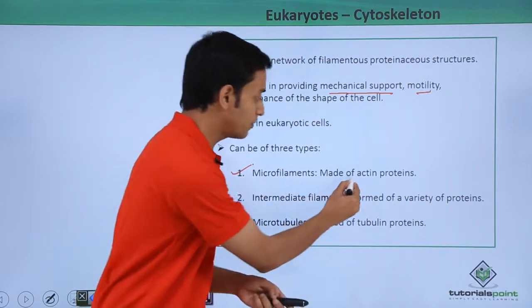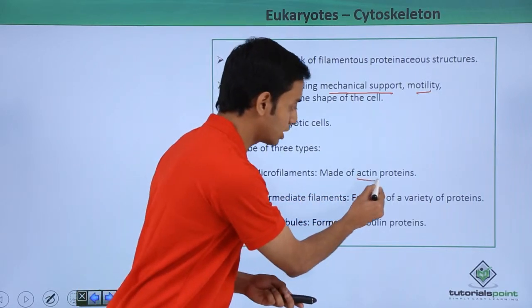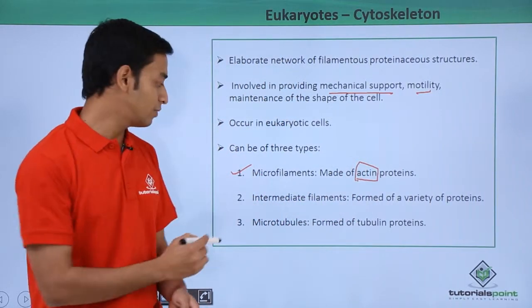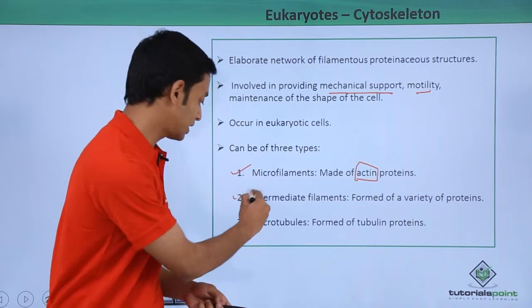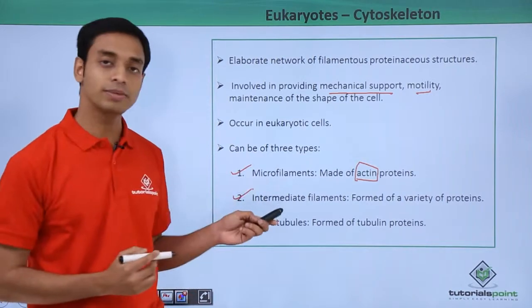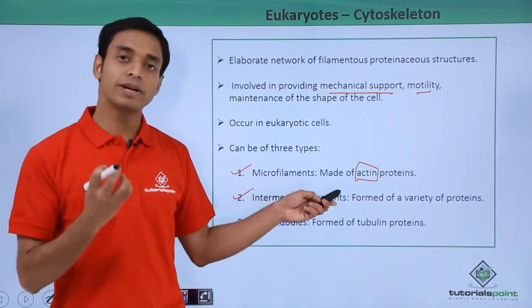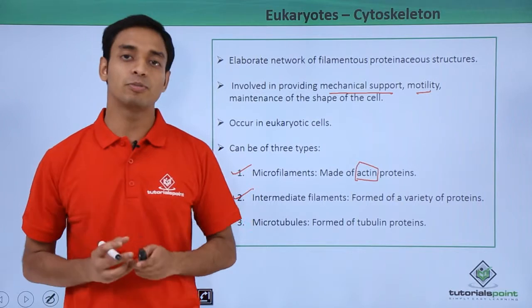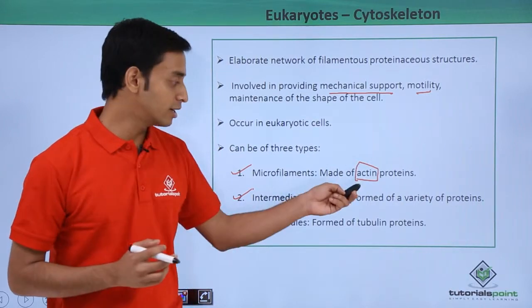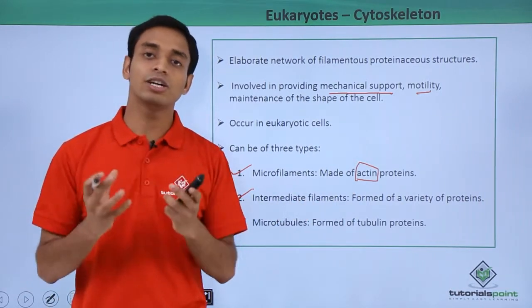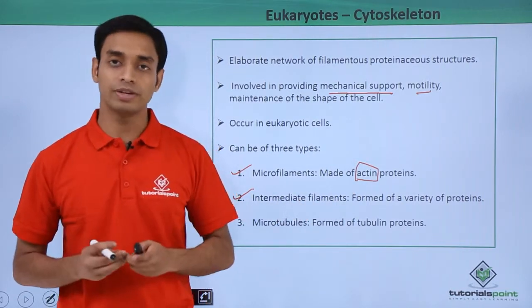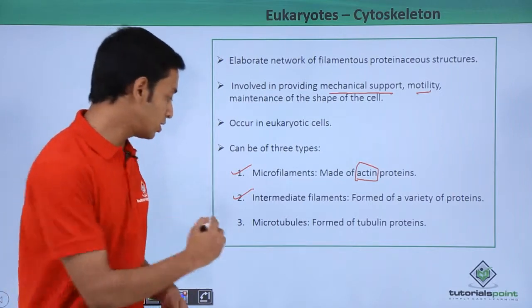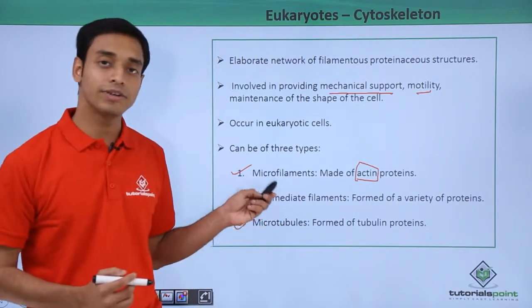The second type is intermediate filaments. These are not made of a specific type of protein; instead, they are formed with a variety or mixture of different types of proteins. The third form is known as microtubules.